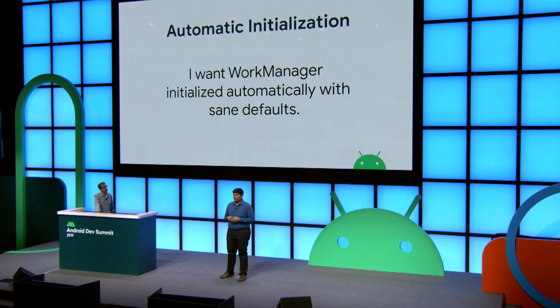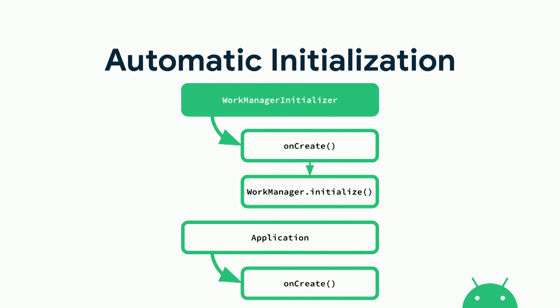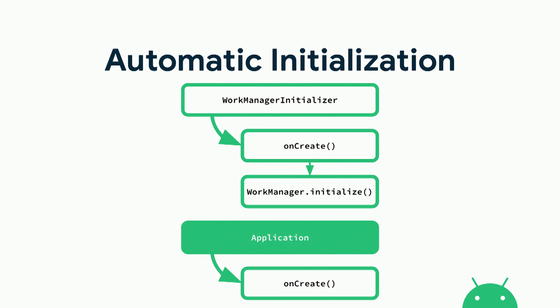Sumir touched upon how to experimentally use WorkManager and talked about initialization. Let's look at initialization in more detail. There are two types: automatic initialization and on-demand. Automatic initialization is useful when you just want WorkManager initialized automatically with the default configuration — you don't want to customize anything. This works via a content provider called WorkManagerInitializer that gets manifest-merged into your app. Content providers get initialized before application onCreate happens, so in WorkManagerInitializer's onCreate, we call WorkManager.initialize with the default configuration. When application onCreate happens, WorkManager is already initialized, so WorkManager.getInstance always gives you a non-null instance.